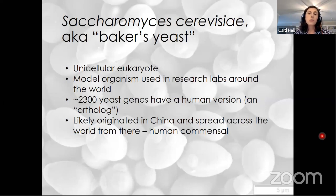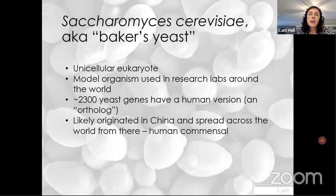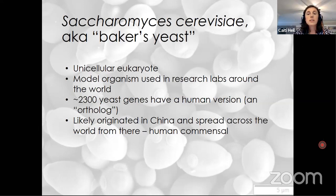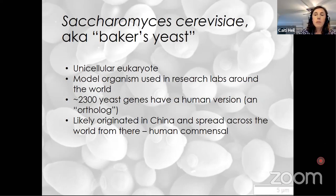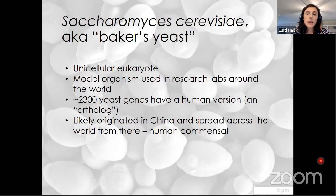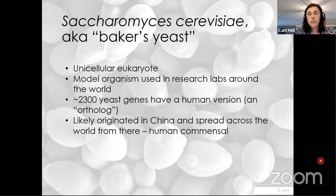Researchers use Saccharomyces cerevisiae to help understand topics including evolution, genetics, biochemistry, and even human disease. One reason we can do this is because humans and yeast share many genes in common. Around 2,300 yeast genes have a human ortholog — a gene that evolved from a common ancestor of human and yeast — and many of these genes actually retain the same function. But unlike in humans, in yeast we can delete, edit, or replace genes to see what they do, making them a really powerful system for better understanding biology across the tree of life.